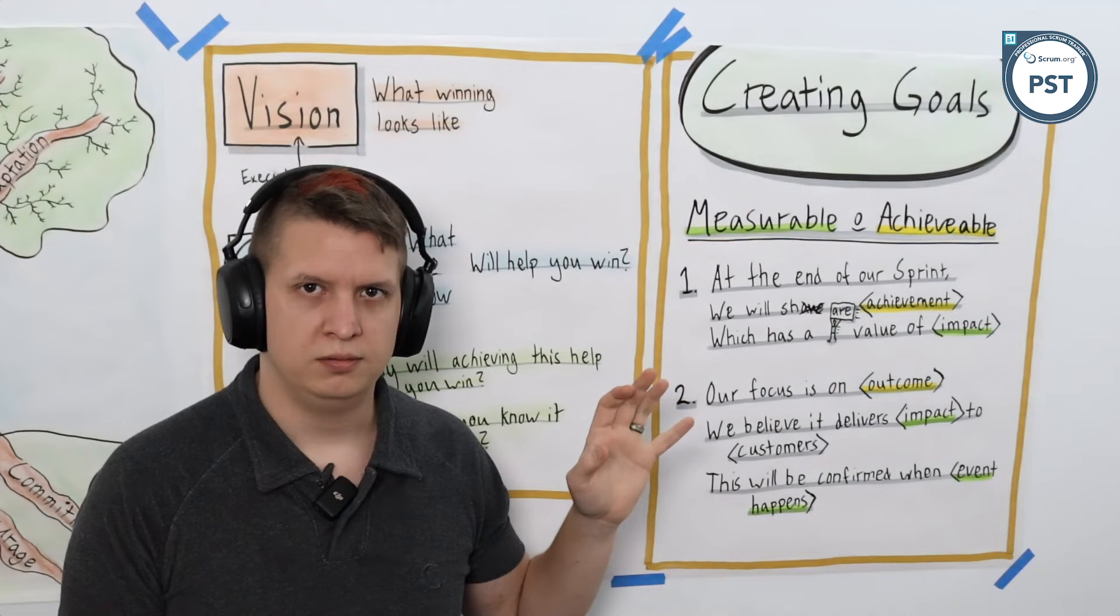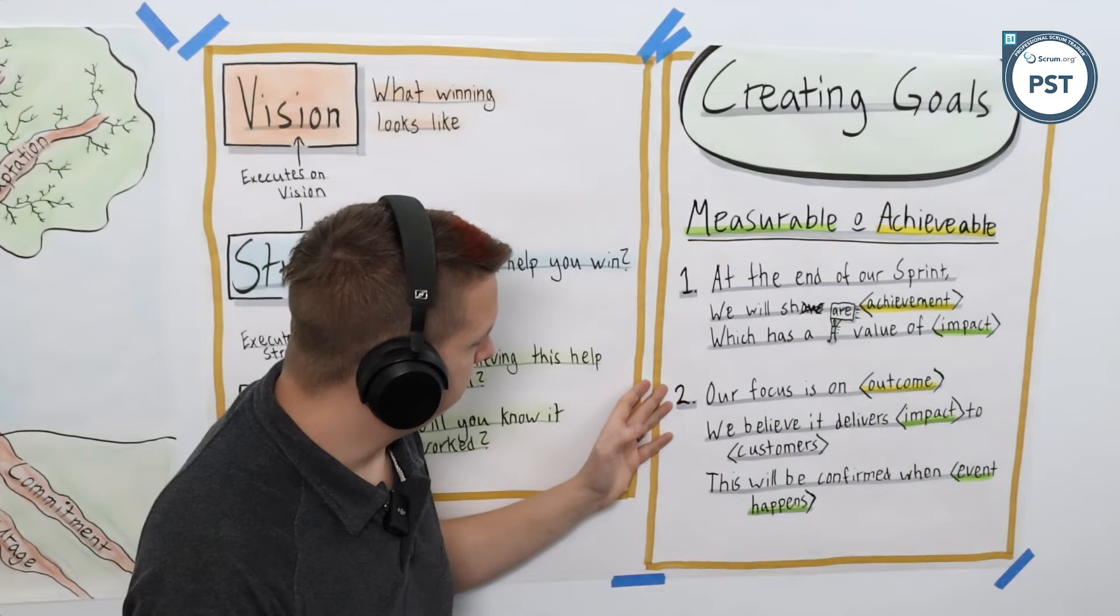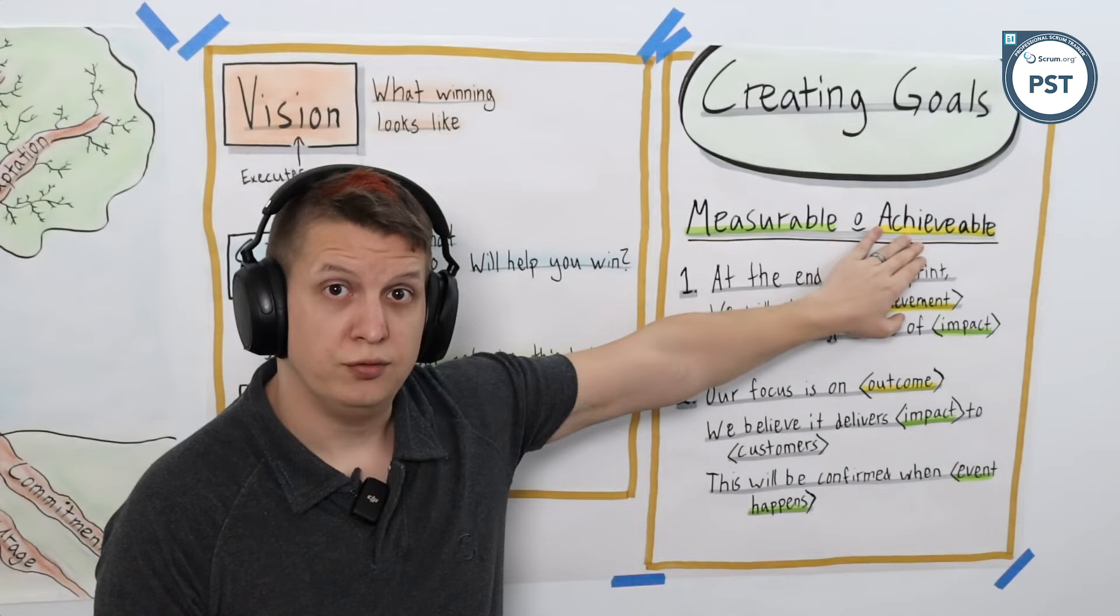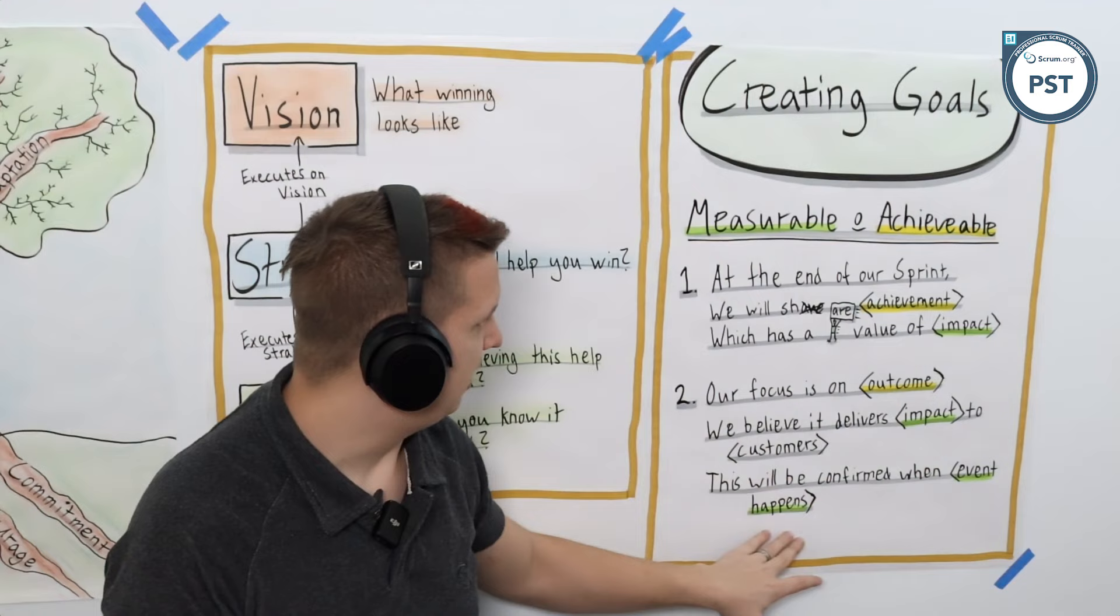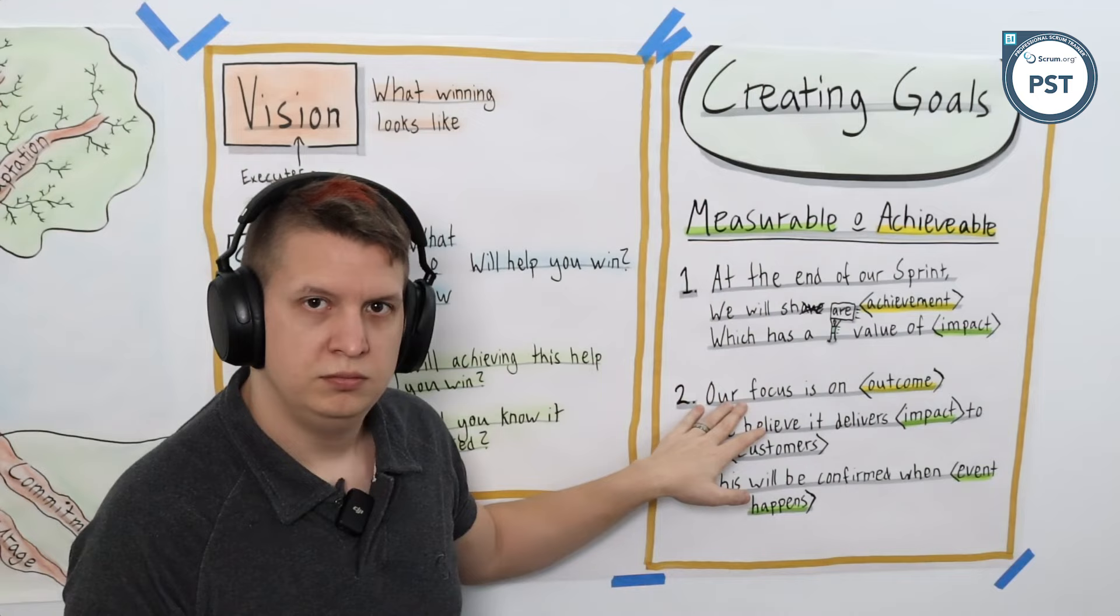The second format is: our focus is an outcome, again achievable, we believe it delivers this impact to customers, and this will be confirmed when this event happens. So both impact and event happens are potentially measurable things.